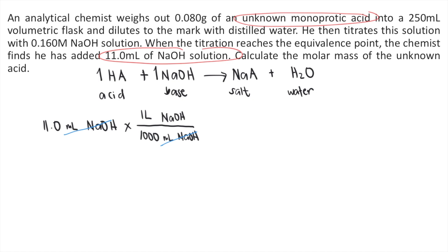According to the problem, the molarity of NaOH is 0.160 molar. When we say molar, that means moles per liter. Therefore, 0.160 molar means there are 0.160 moles per one liter. For every one liter of NaOH solution, there are 0.160 moles of NaOH. The liters cancel out, and now we have moles of NaOH.